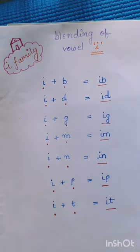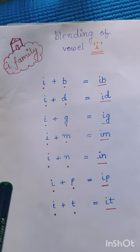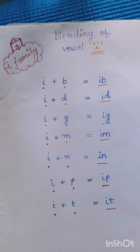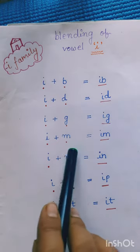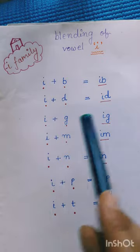So, before we do the blending, you must know the short sound of vowel I. And that is 'ih'. So, before we do CVC word — your three-letter word — let's see how our vowel I blends with the other consonants and makes two-letter words. So, let's see.